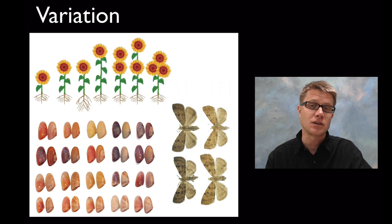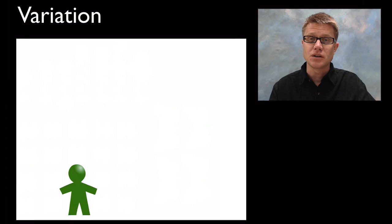In any population what you're going to see is variation. In these flowers or clams or moths you're going to see variation within that population. There are clearly going to be similarities but there are also going to be differences. Where does that variation come from?